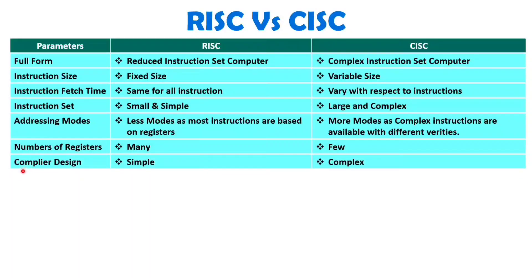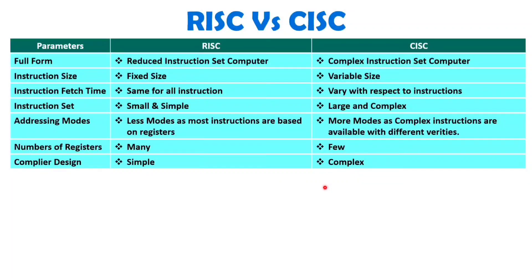When we talk about the design of the compiler, it will be simple with RISC because we have a small set of instructions. With CISC architecture, compiler design will be complex because the instruction set is complex and many addressing modes are there. So your compiler design will be complex with CISC architecture.